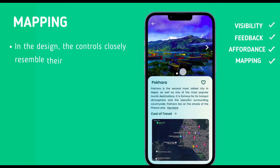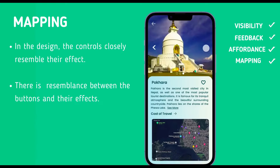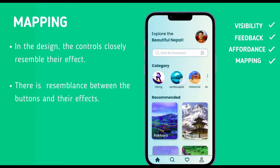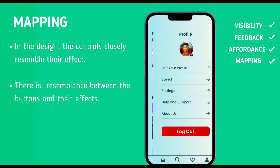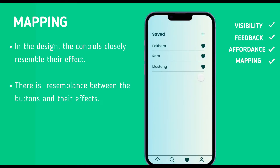Similarly, mapping is the idea that in good design, the controls for something will closely resemble their effect. As we can see, the next arrow shows the next picture or takes us to the next section, whereas the back arrow does the opposite of what the next arrow does.